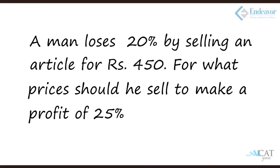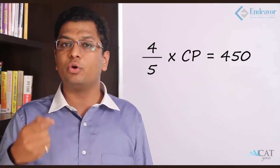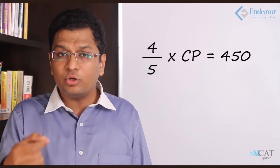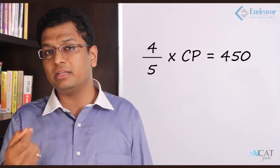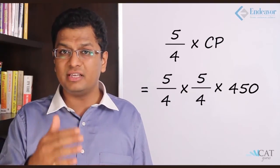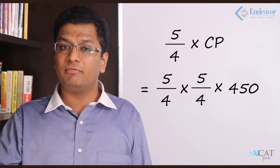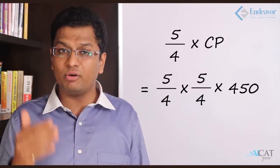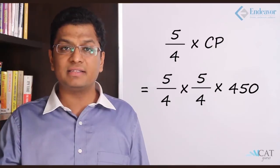Example: A man loses 20% by selling an article for 450 rupees. At what price should he sell to make a profit of 25%? Converting percentages to fractions: 20% = 1/5 and 25% = 1/4. A 20% loss means (1 − 1/5) × CP = 450, so (4/5) × CP = 450. For 25% profit we need (1 + 1/4) × CP = (5/4) × CP. So the new selling price = 450 × (5/4) × (5/4).